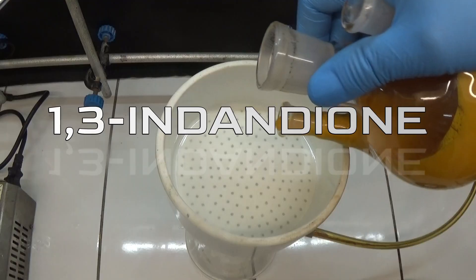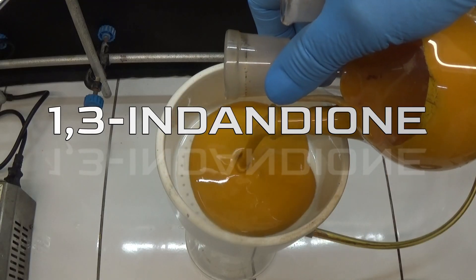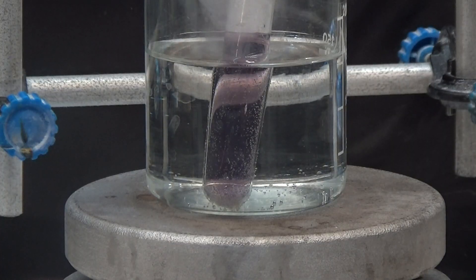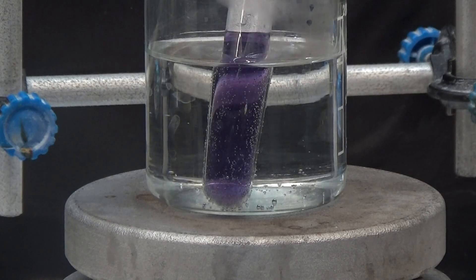In this video we are going to obtain 1,3-indandione. 1,3-indandione is a precursor of ninhydrin, a widely used reagent for determining proteins and amino acids.